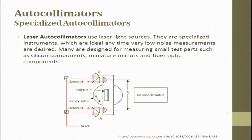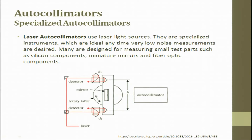There is also a specialized autocollimator called the laser autocollimator, in which we use laser light. It has a beam splitter, and the autocollimator is placed on a rotary table with a mirror and a detector. The beam hits the mirror and gets reflected back to the detector. Two detectors D1 and D2 are used, and the difference between D1 and D2 is recorded and used for measurement. Laser light is very powerful, allowing long distances to be measured.